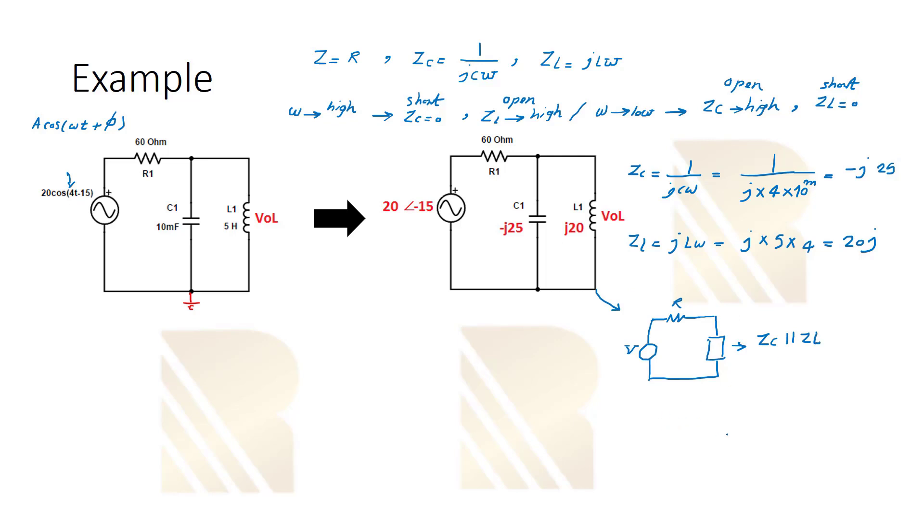So now let's see how we can find the voltage here. The voltage we are going to find is VOL. The VOL is the voltage between these two, this node. So here we can use a voltage division. VOL is equal to, I'm going to show this is ZO. VOL is equal to ZO over ZO plus 60 times the source voltage, which is 20 with a phase of minus 15.